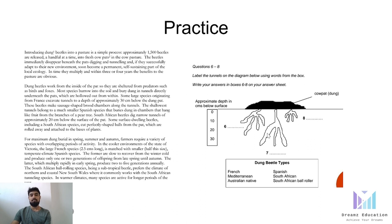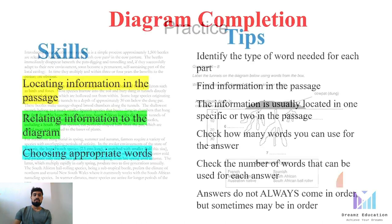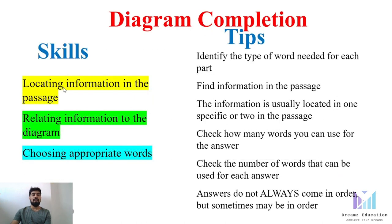A diagram looks something like this. Your task is to identify the parts of this diagram — how are you supposed to find the parts by reading into the passage? These are the three important aspects, the skills that you need to follow whenever you are attempting a diagram completion type of question.